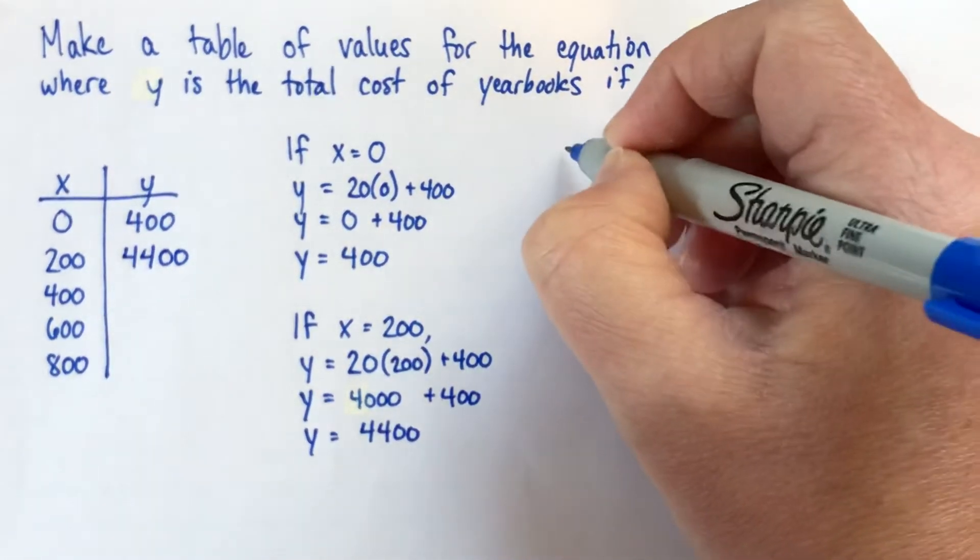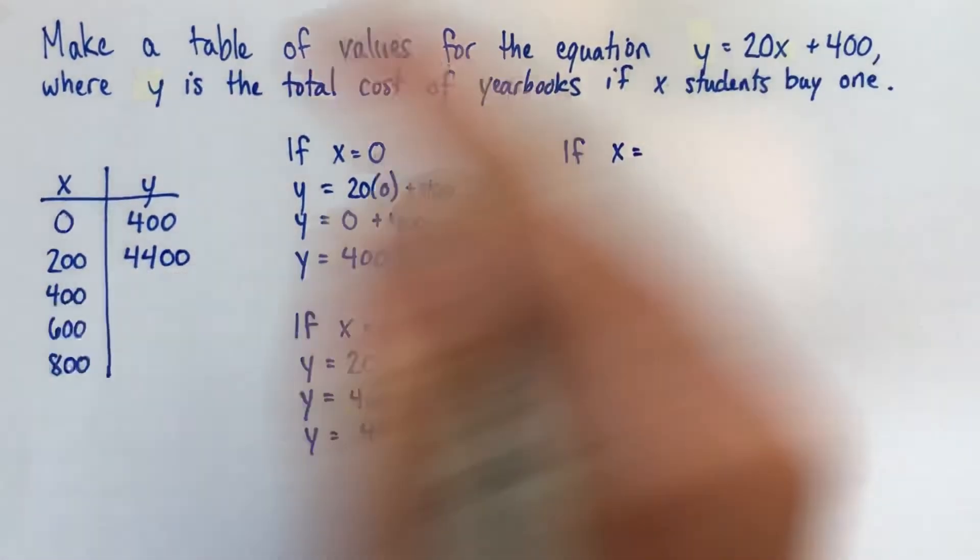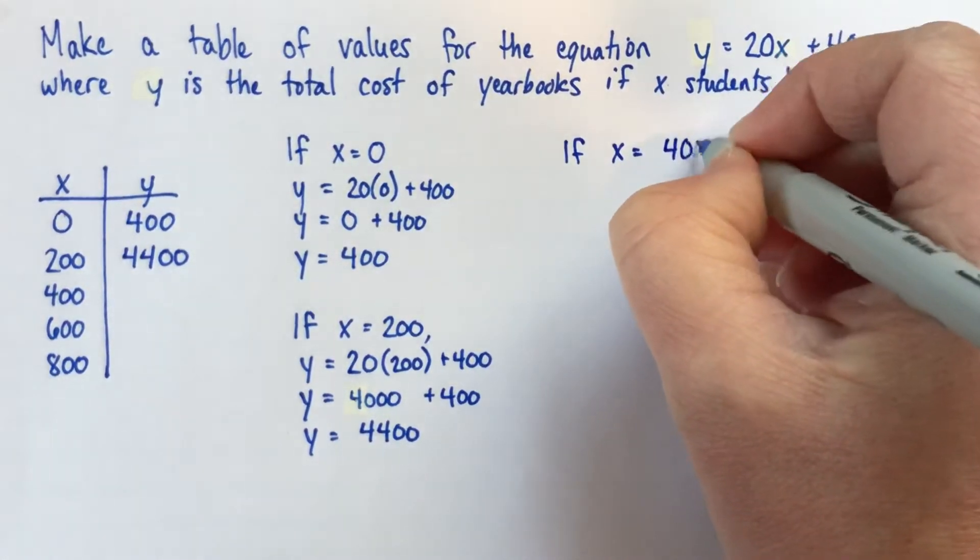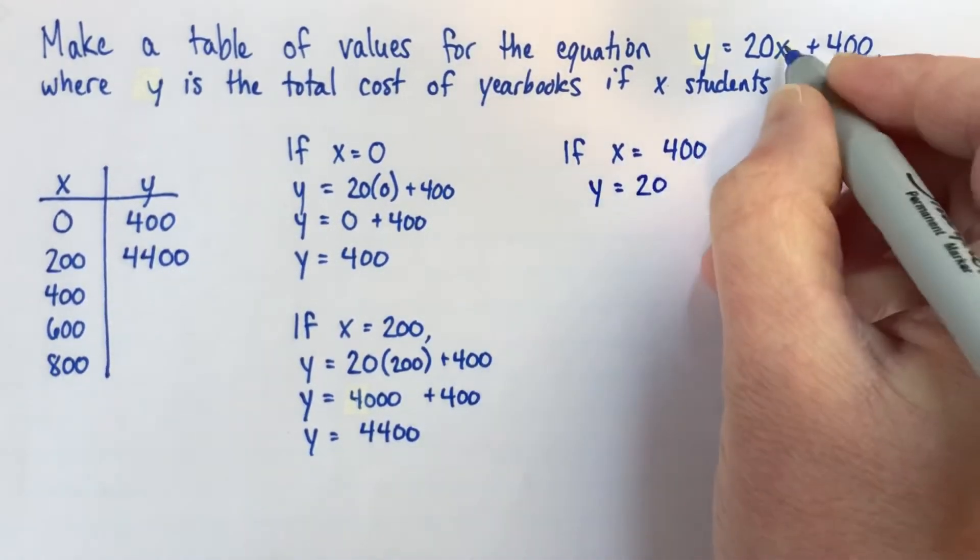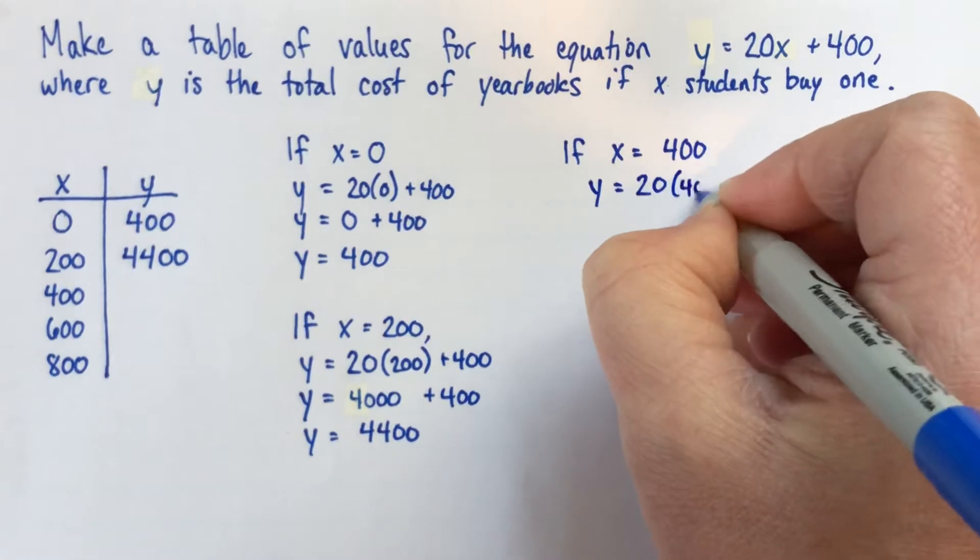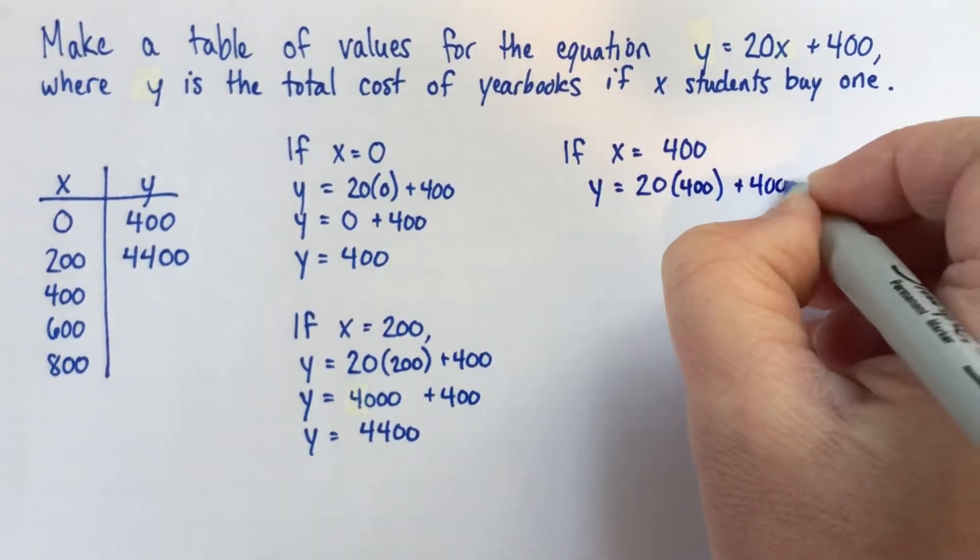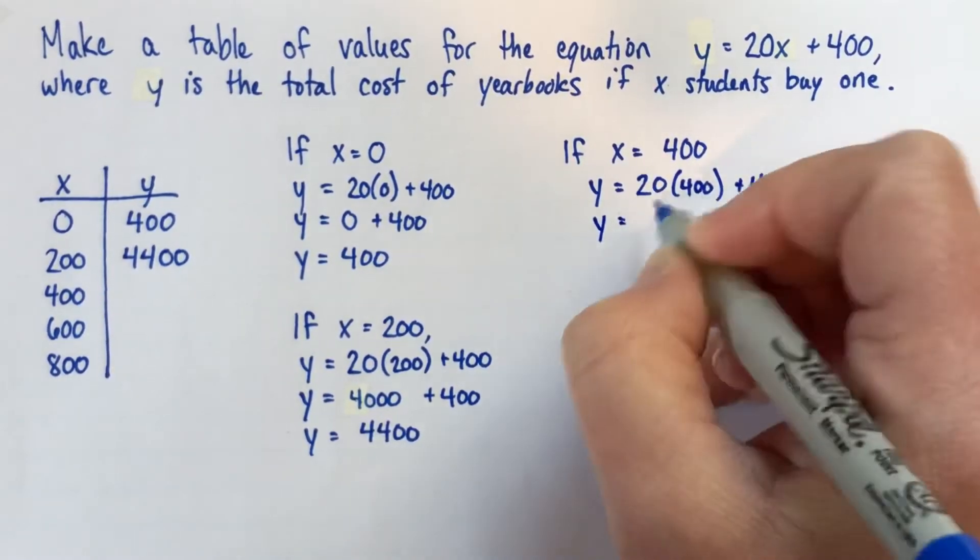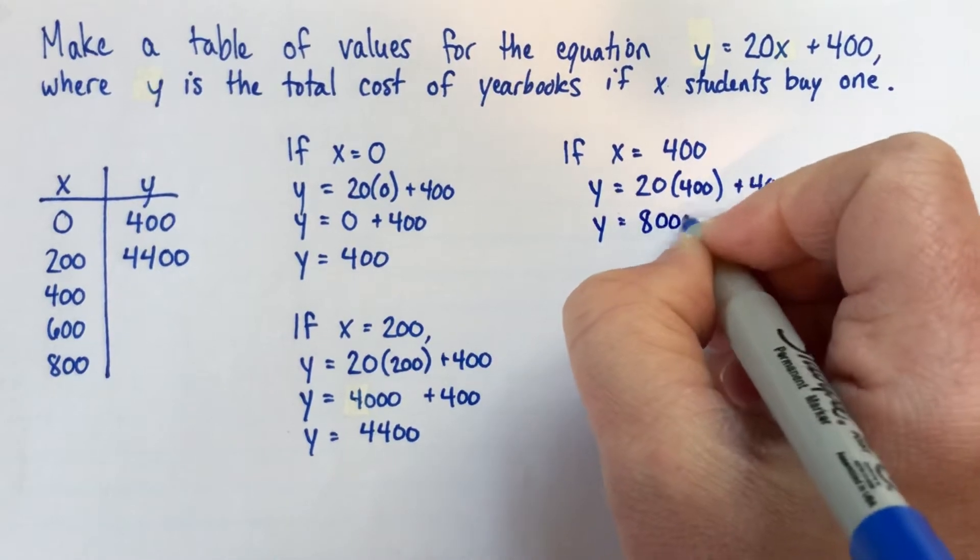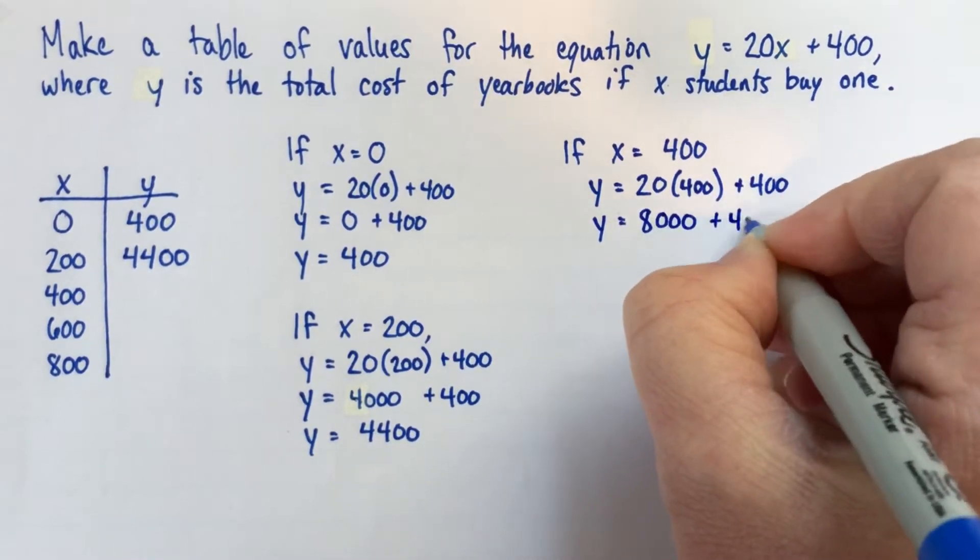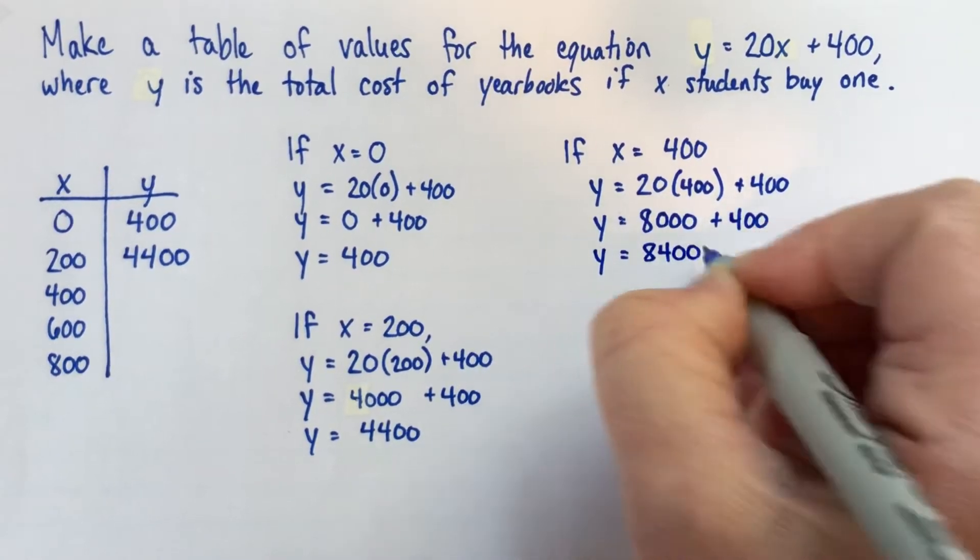I'll do one more. If x is 400, y is equal to 20 times x, so that's 20 times 400, plus 400. It's just a coincidence that those two 400s are the same number. So 20 times 400 is 8,000, plus 400 there, so y is equal to 8,400.